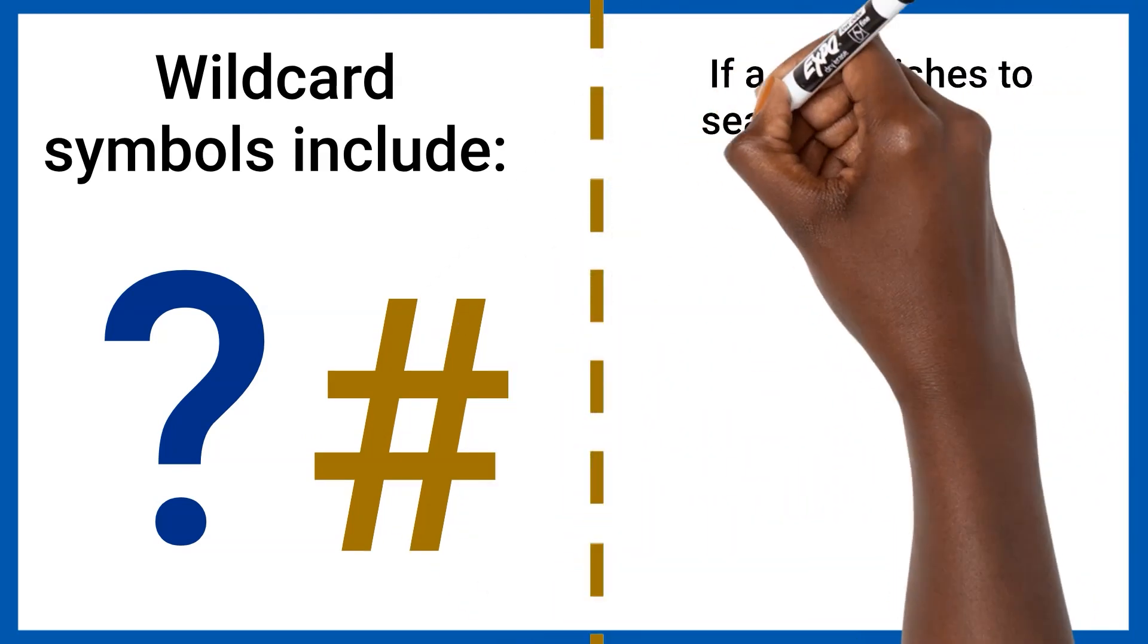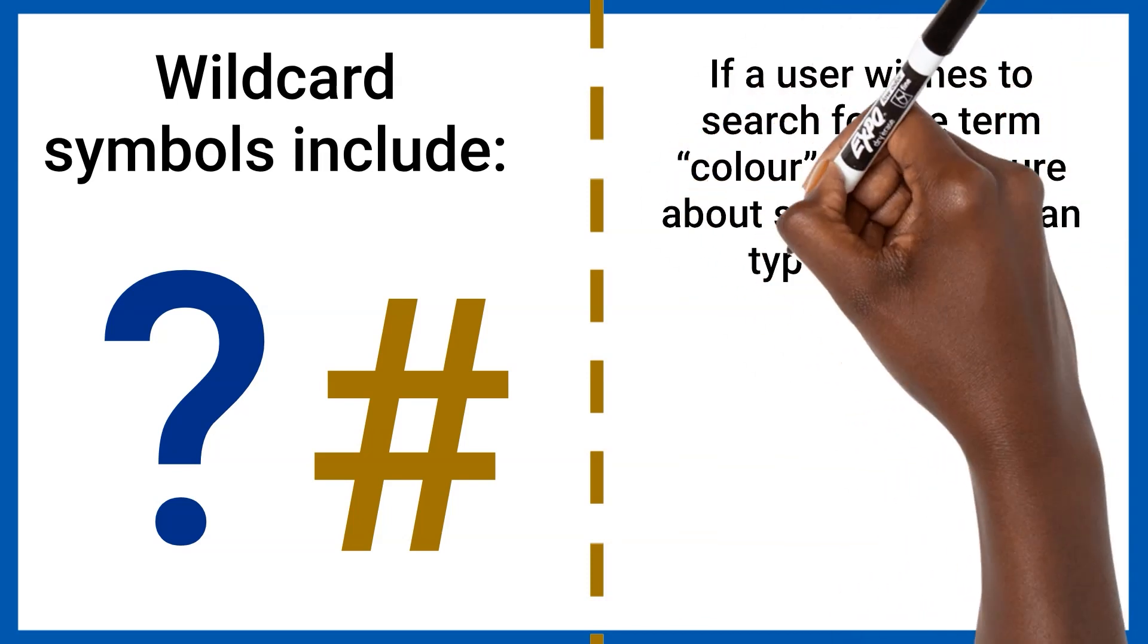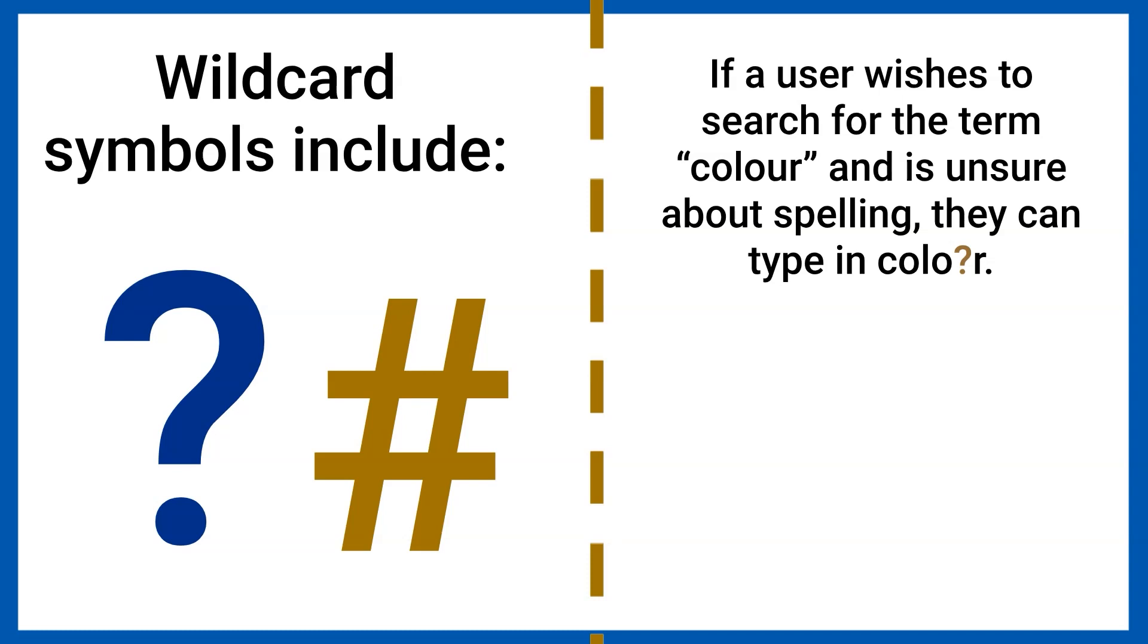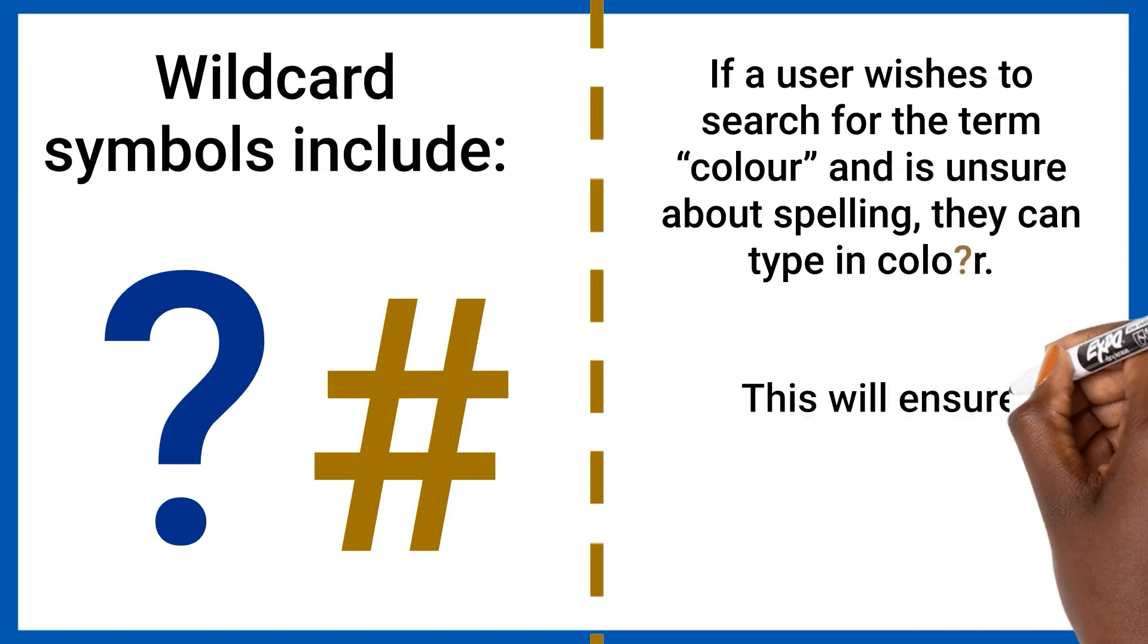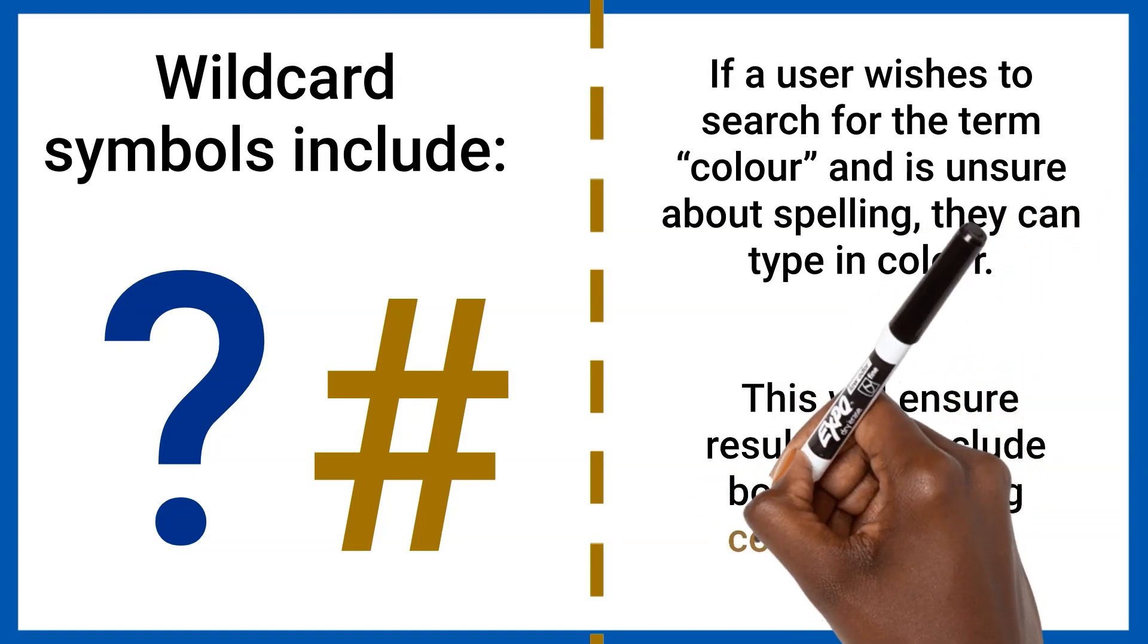If a user wishes to search for the term color and is unsure about the spelling, they can type in color spelt c-o-l-o question mark r. This will ensure results that include both the spelling color with a u and color without the u.